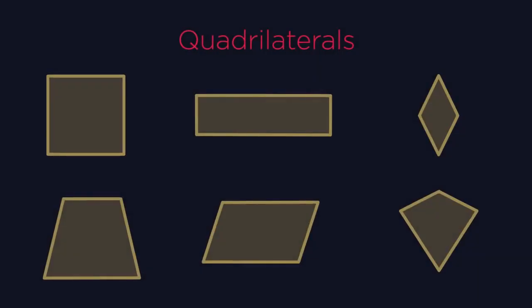What do these shapes all have in common? They're all two-dimensional shapes with four sides and four angles. These are known as quadrilaterals.